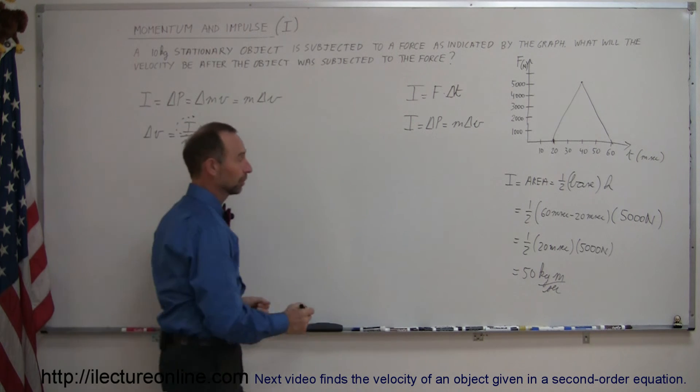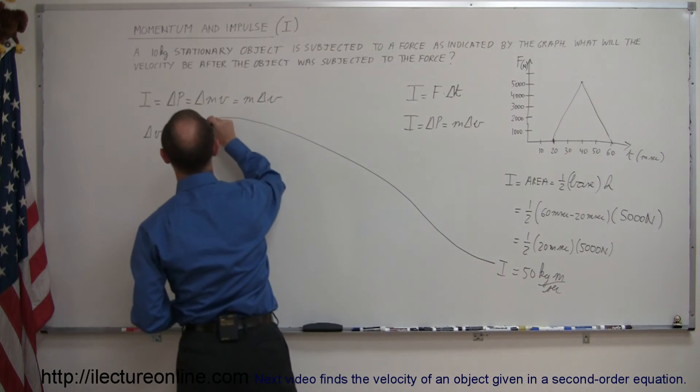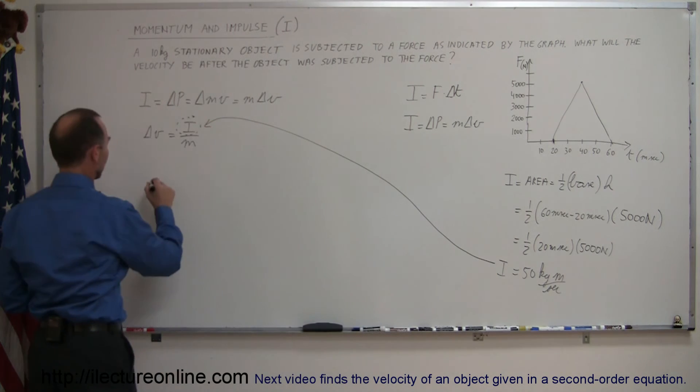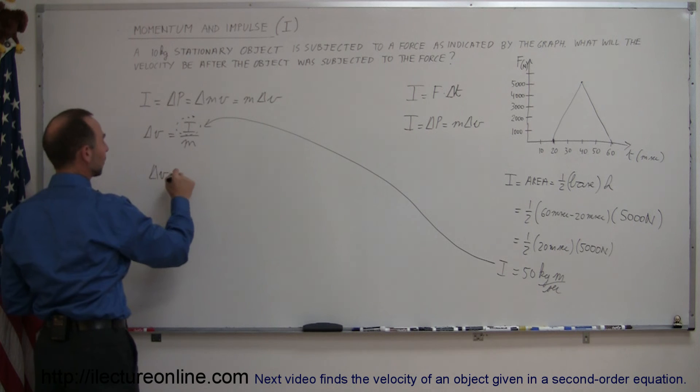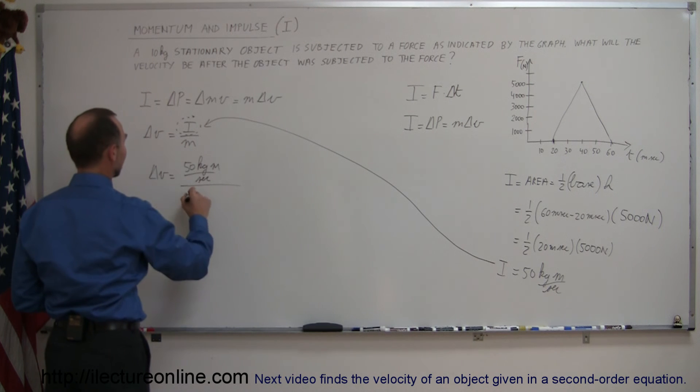Alright, that's the impulse. We can now take that and substitute that in. So we have the change in velocity is equal to the impulse which is 50 kilogram meters per second divided by the mass which is 10 kilograms.